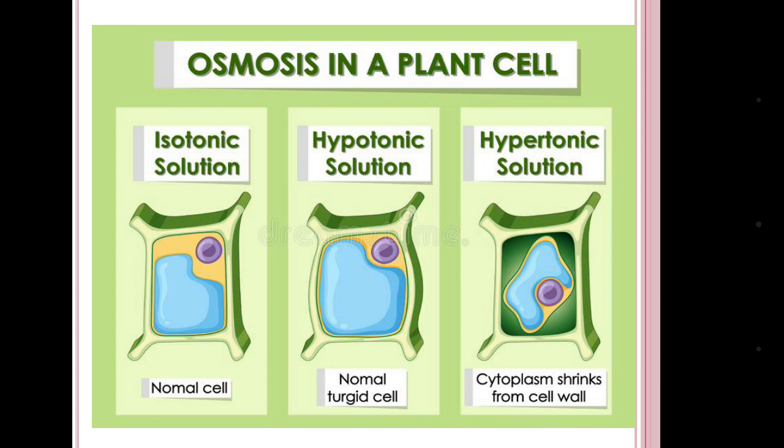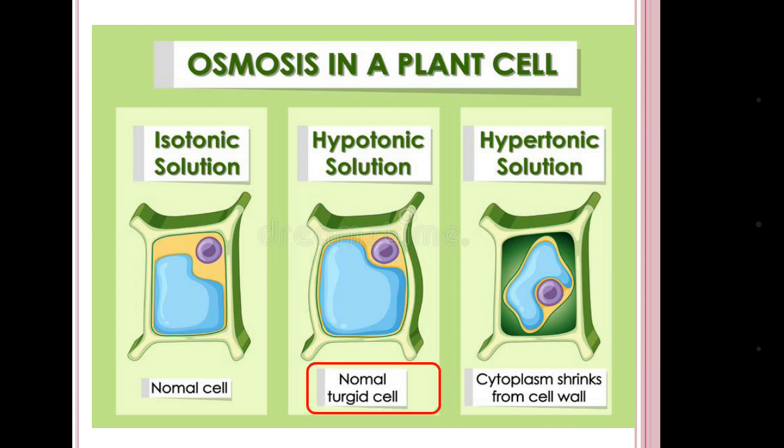Next, osmosis can maintain the turgidity of the cell. When osmotic water enters inside the cell, the cell becomes swollen. Through this process, osmosis helps to maintain turgidity in the plant stem and the plant remains fresh.